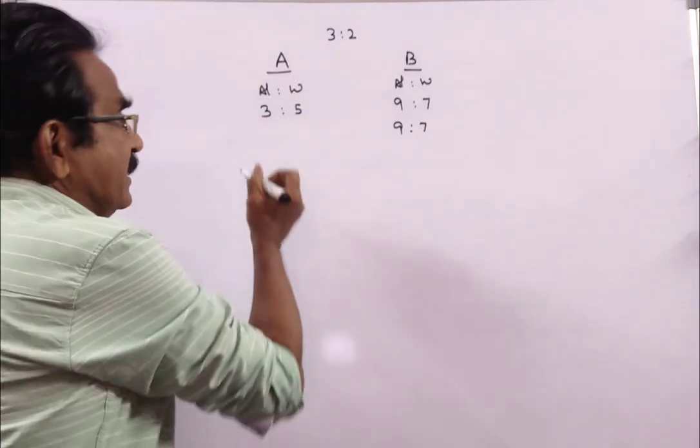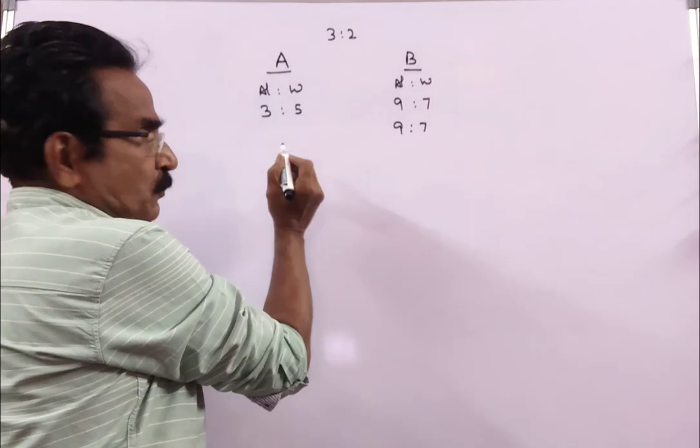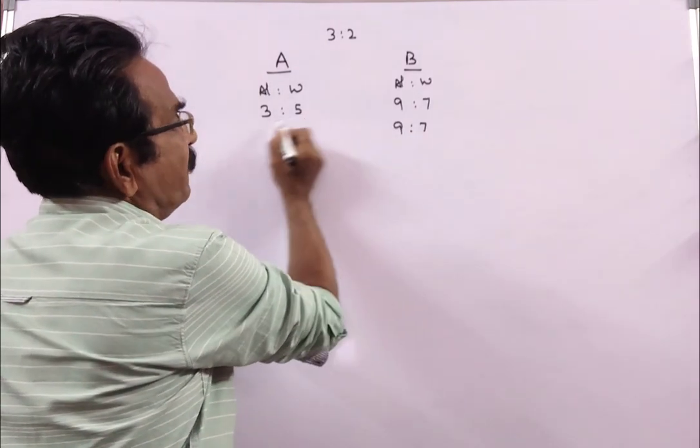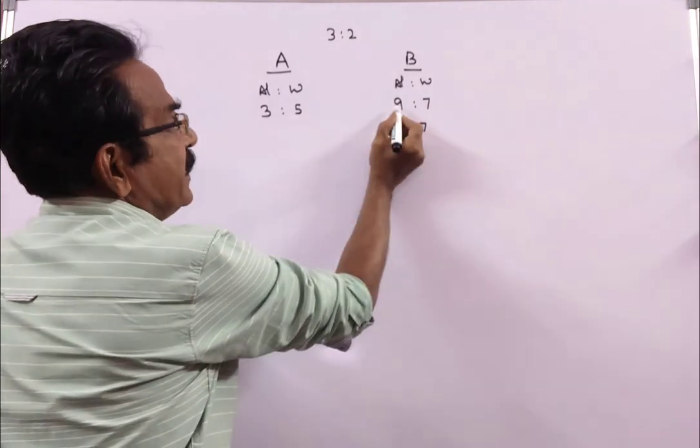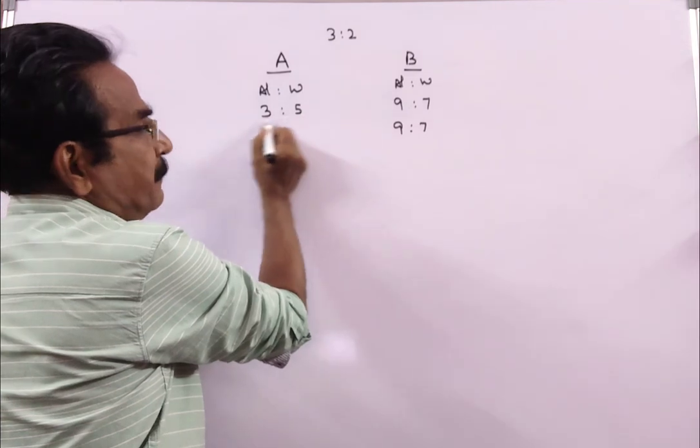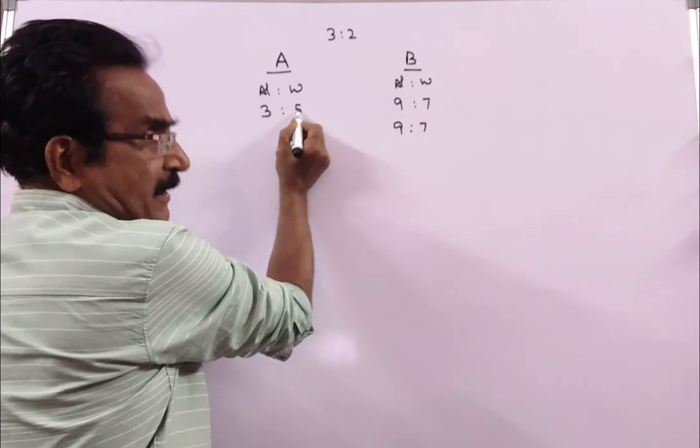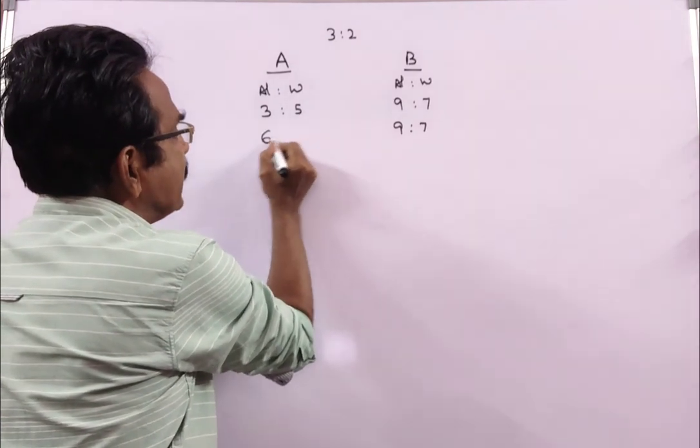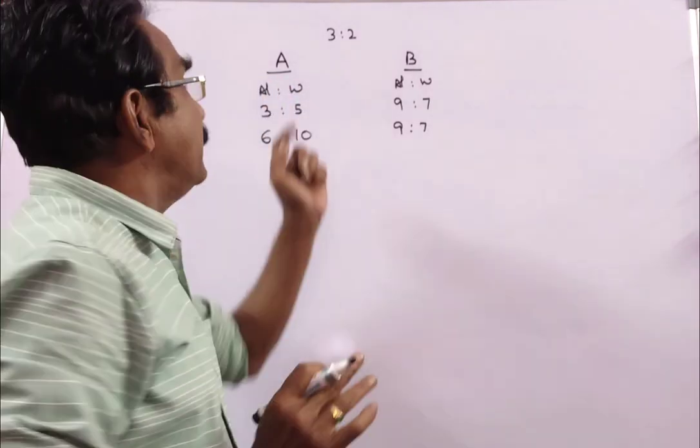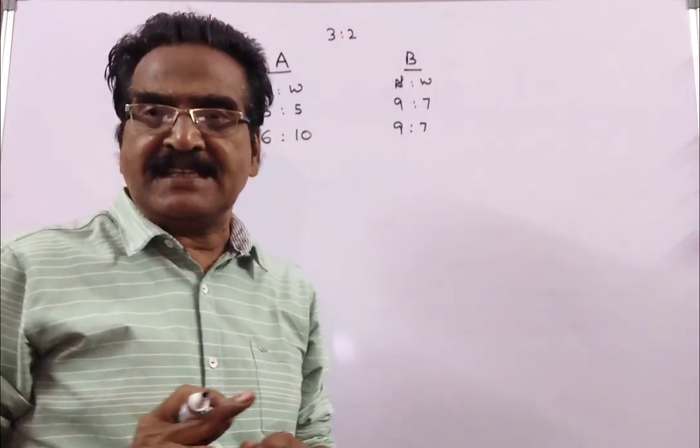First thing you have to do is equal the quantities of A and B in both the vessels. Here this is 9 plus 7, 16. Here it is only 3 plus 5, 8. Multiply this ratio by 2 to get 6, 10. Now the quantities are equal in both A and B vessels.